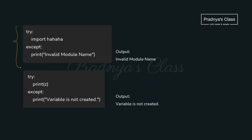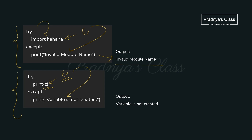Here are some more examples of exception handling. We are trying to import an invalid module name, so that statement is written in the try block. When the exception occurs, we come to the except block — that's why we are getting that output. In another case, we are trying to access a variable without creating it, so the exception fires and we come to the except block, where we print the message.